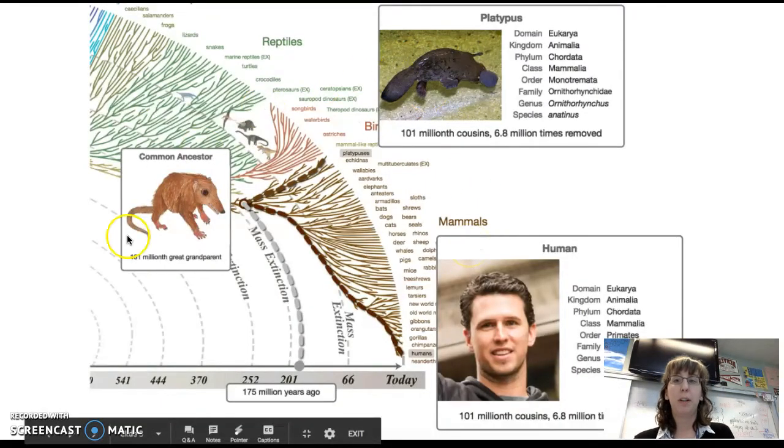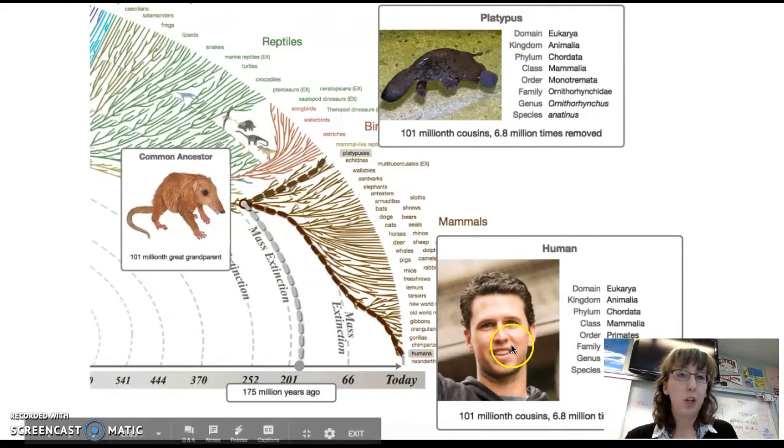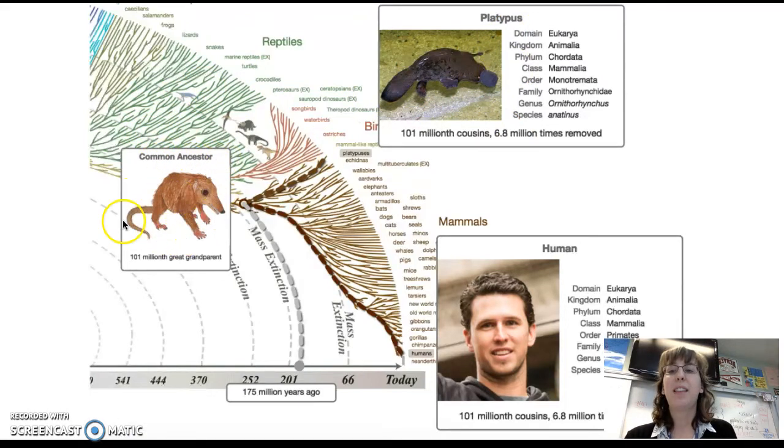Here is another example. This is a really cool website that I want to share with you. Here you can see that humans and platypuses, or platypi, they had a common ancestor that looks somewhat like this. That is equivalent to being 100 millionth great-grandparent right here, which makes platypus and humans 101 millionth cousins.